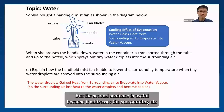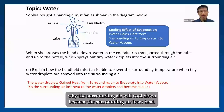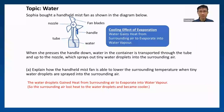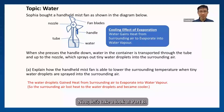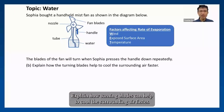The second sentence is useful because it addresses the surrounding air — it answers why the surrounding air will cool down, because the surrounding air loses heat, although it has the same meaning as the water droplets gain heat. That is Part A. Now let's take a look at Part B: explain how turning blades can help to cool the surrounding air faster.